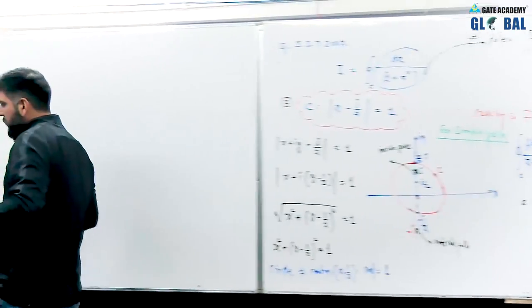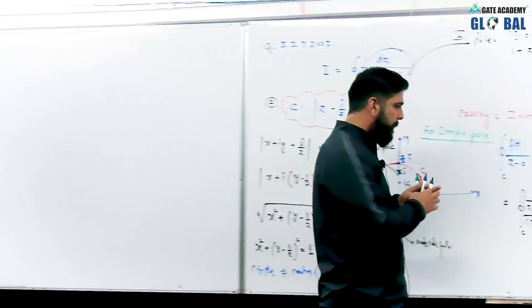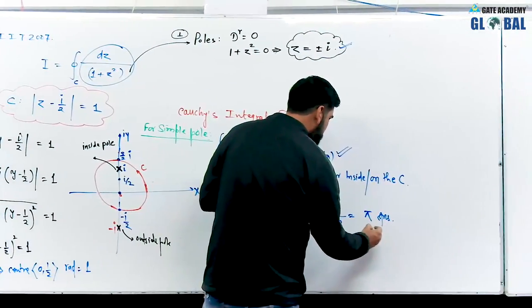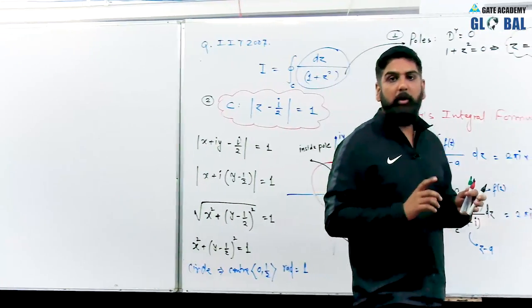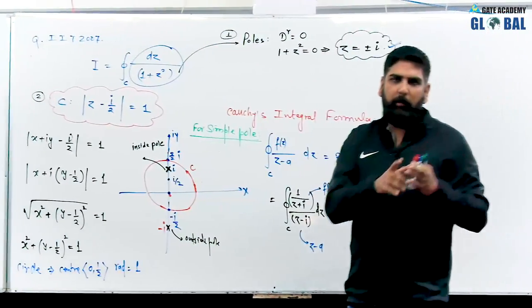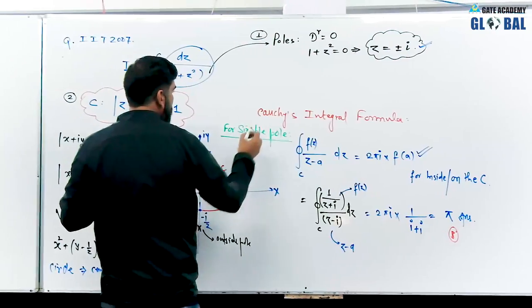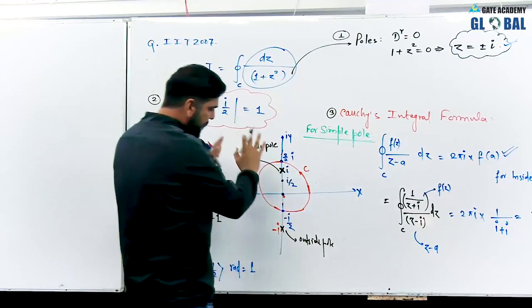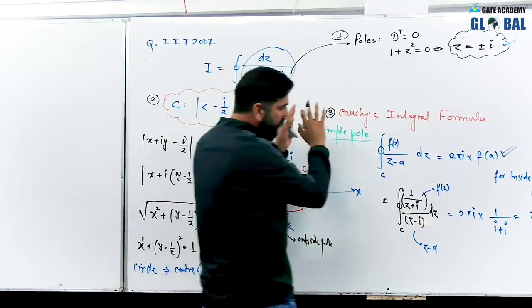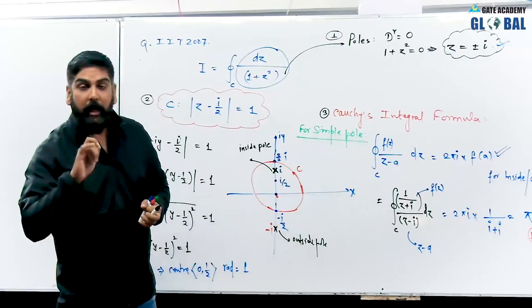Looking at the options, option B is pi which is absolutely correct. So you can see: step 1 is finding the poles, step 2 is identifying the curve, and step 3 is checking whether the pole is inside, on, or outside the circle. Then we apply the Cauchy integral formula for the inside or on-the-curve pole. That's it and that's all.